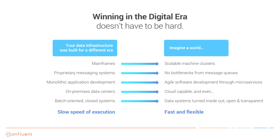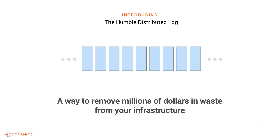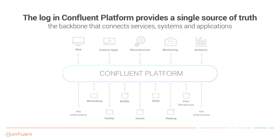Your infrastructure was built in a time when daily batch reports were the norm. Introducing the humble distributed log. It sits at the center of Confluent Platform and Kafka and makes it possible for you to save millions of dollars of waste from your infrastructure. It is the single source of truth — a simple, straightforward construct through which you can eliminate a great deal of complexity. It is the foundational component of Apache Kafka and uses the log as a way to allow all systems to communicate on a very basic level.